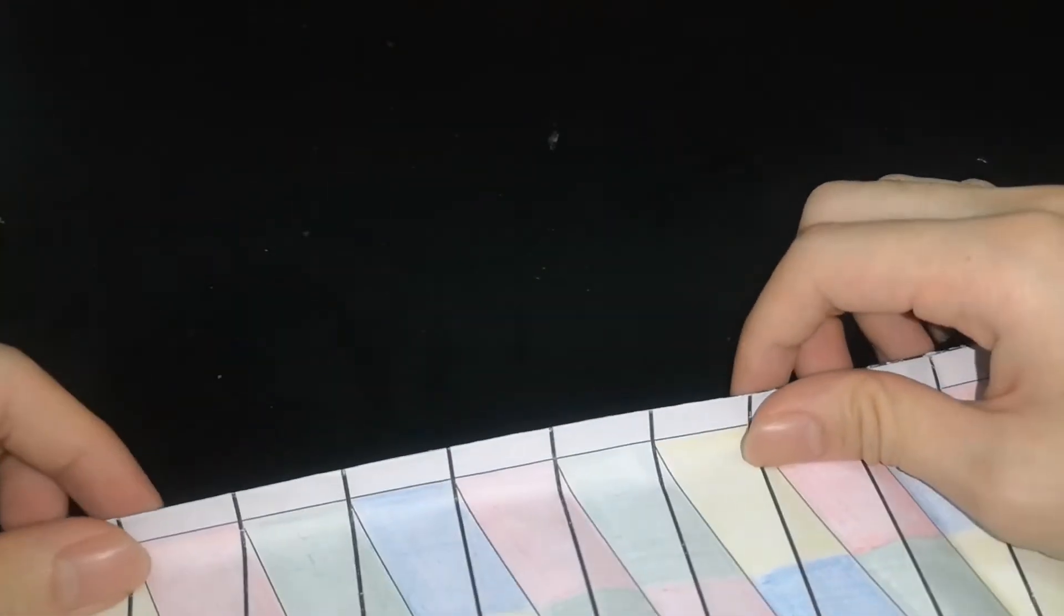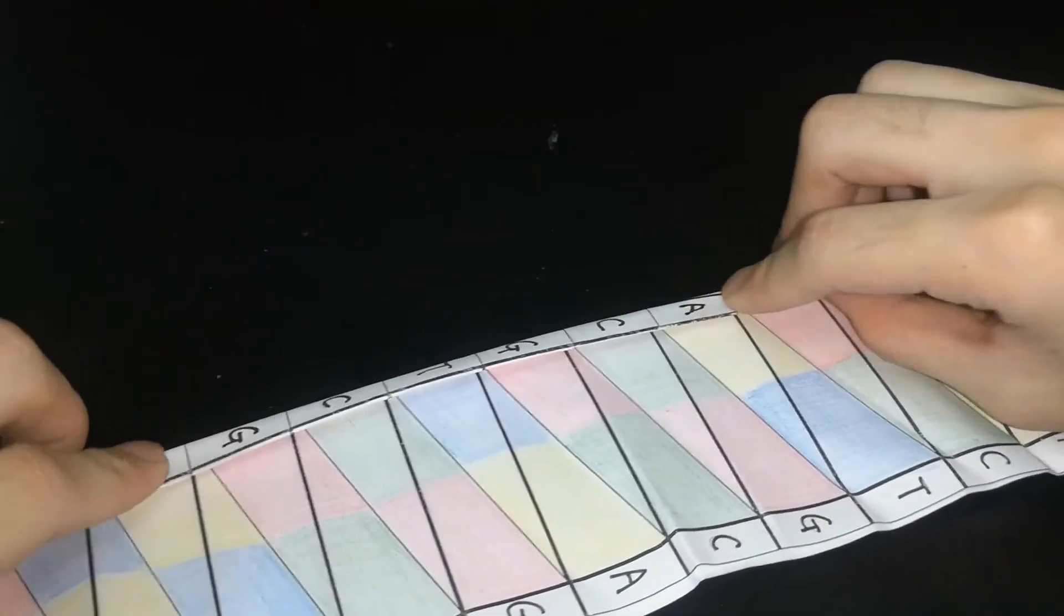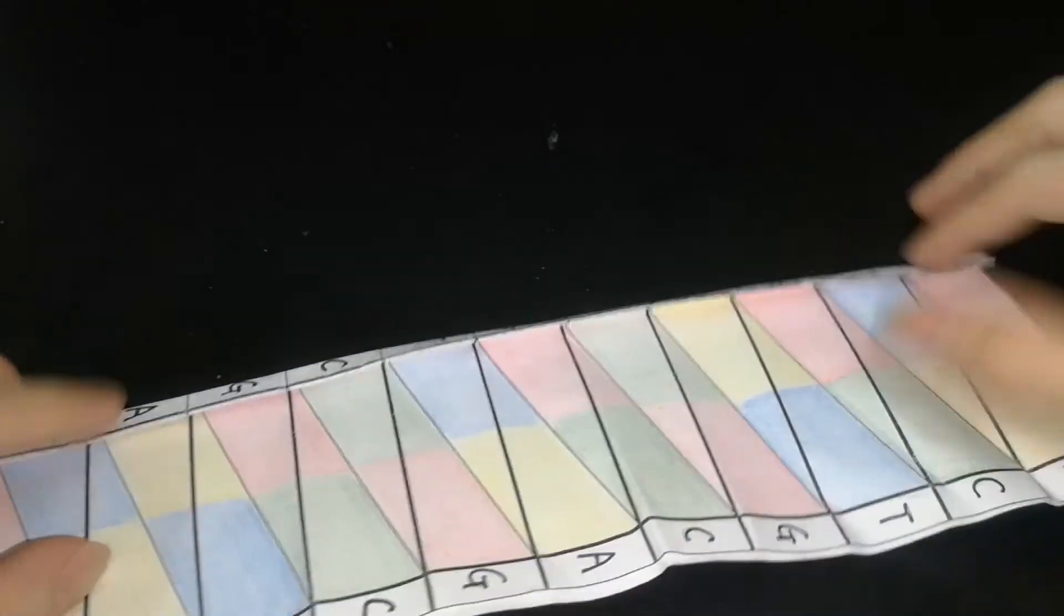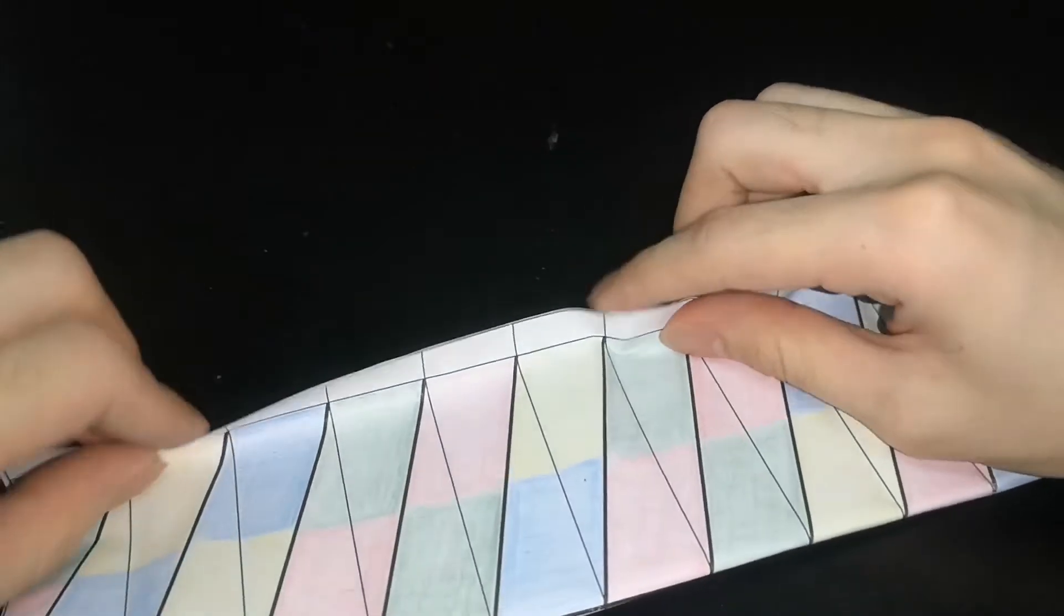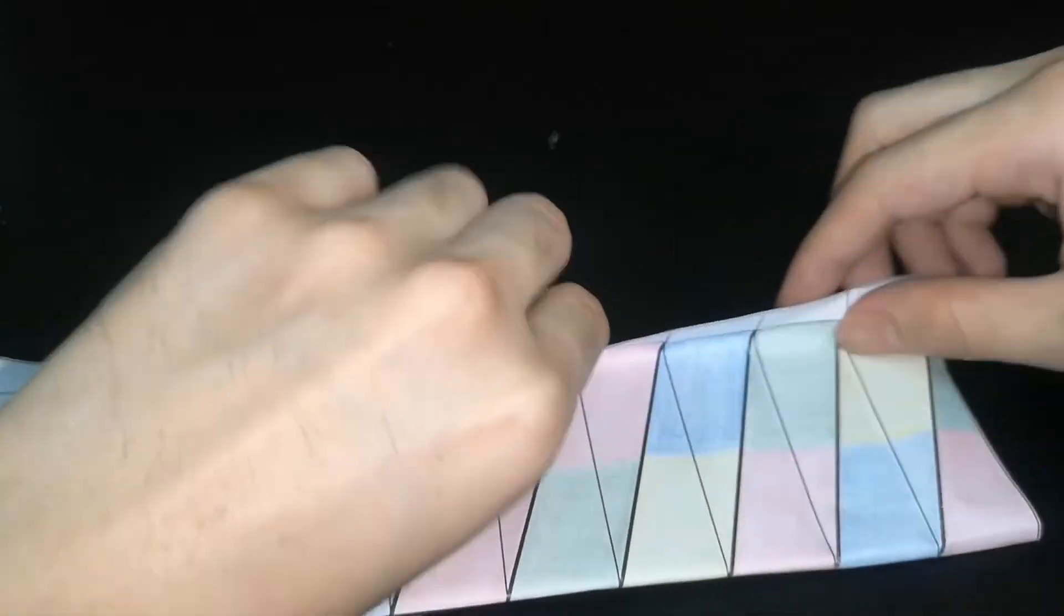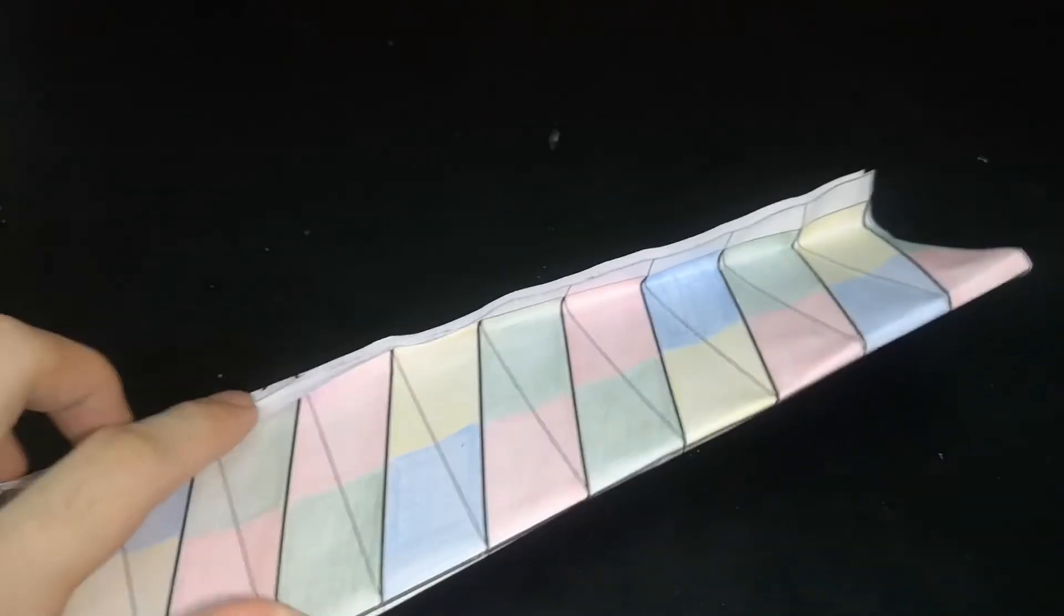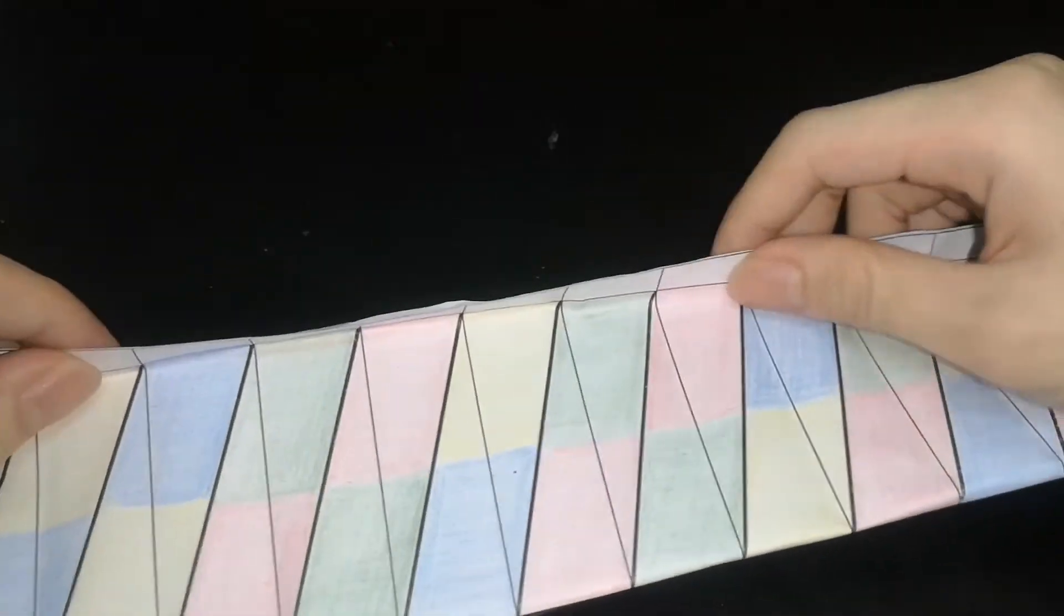Then fold the white edge without the letter up. Repeat for the other edge. Fold the other edge and partially unfold both of the edges.